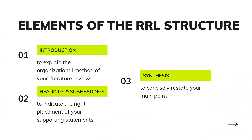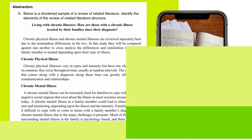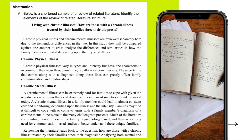The review of related literature consists of three elements: the introduction, which explains the organizational method of the literature review; the headings and subheadings, which indicate the right placement of your supporting statements; and the synthesis, or the conclusion, which concisely restates your main point. Here is a shortened sample of a review of related literature.